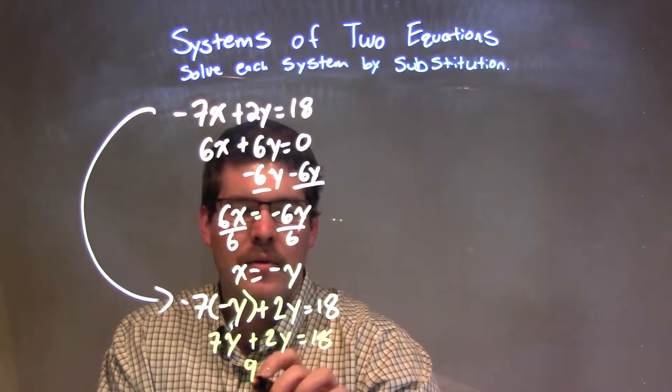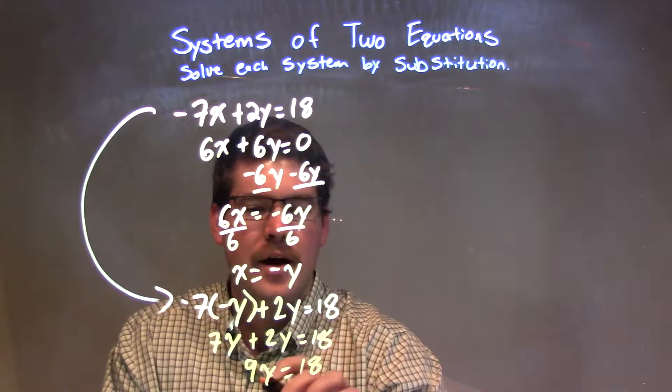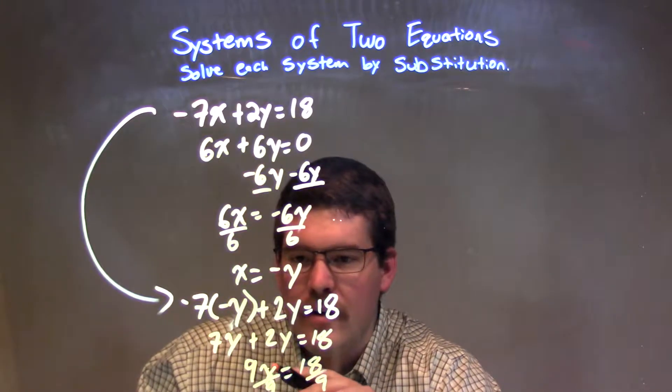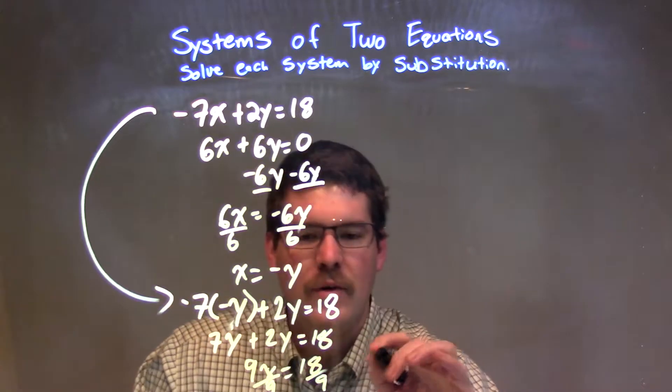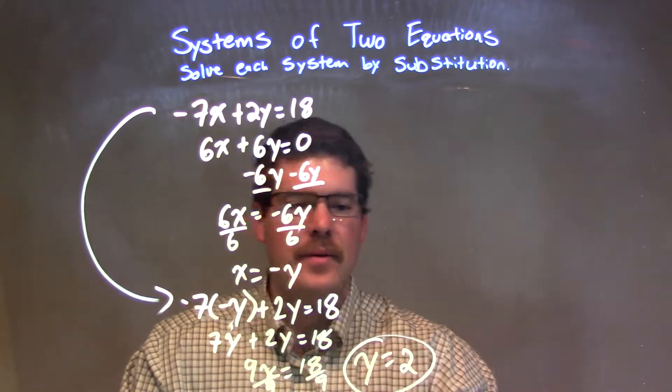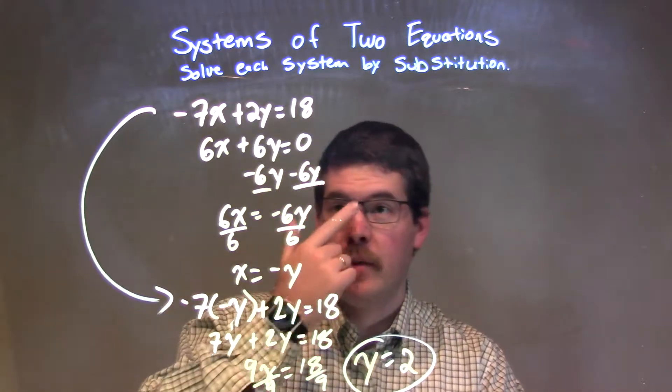7y plus 2y is 9y. I divide by 9 on both sides. That fits on the page there. 9y divided by 9 on both sides, we have y equals a positive 2. I just barely fit it in there. So y equals positive 2, 18 divided by 9.